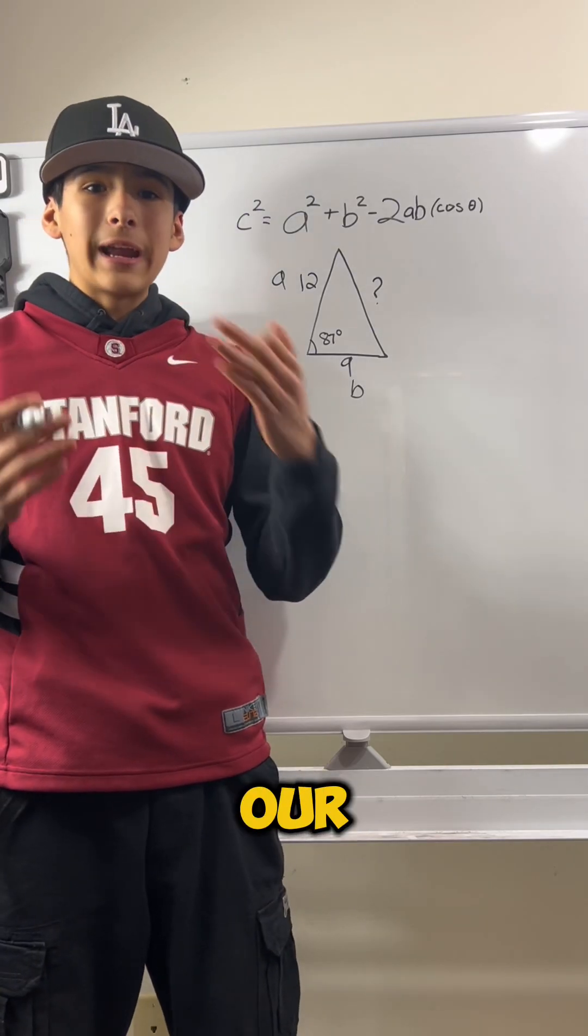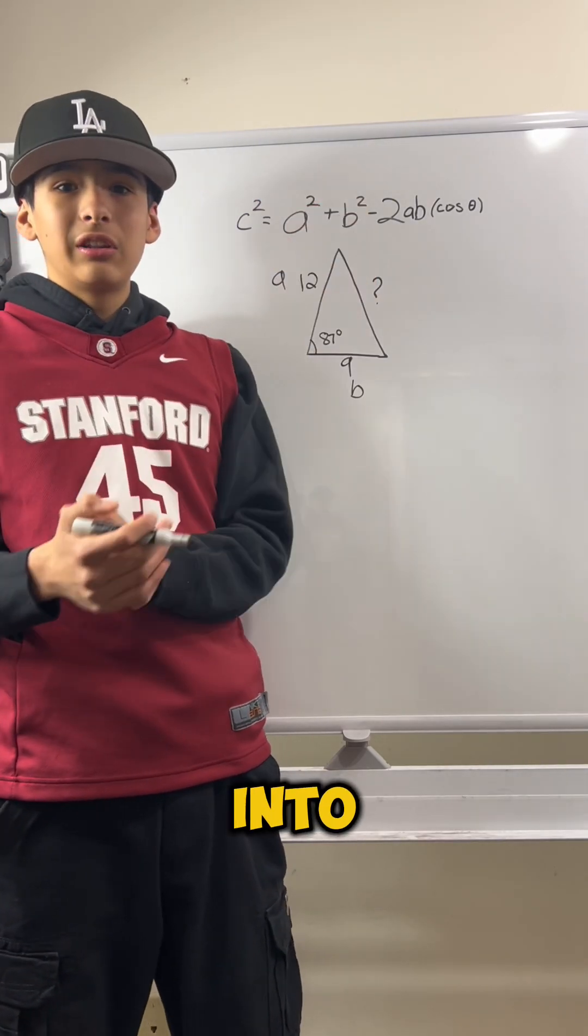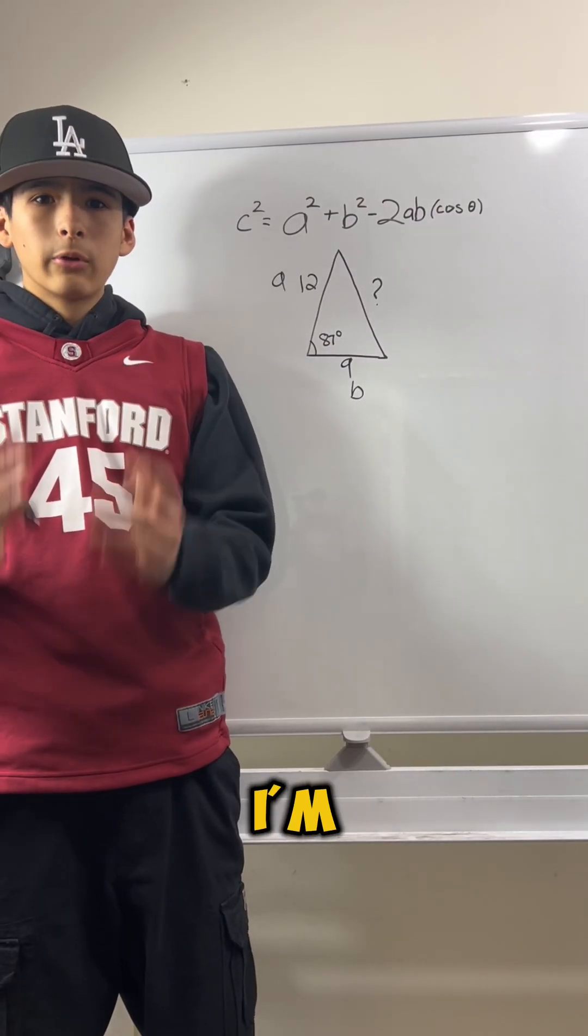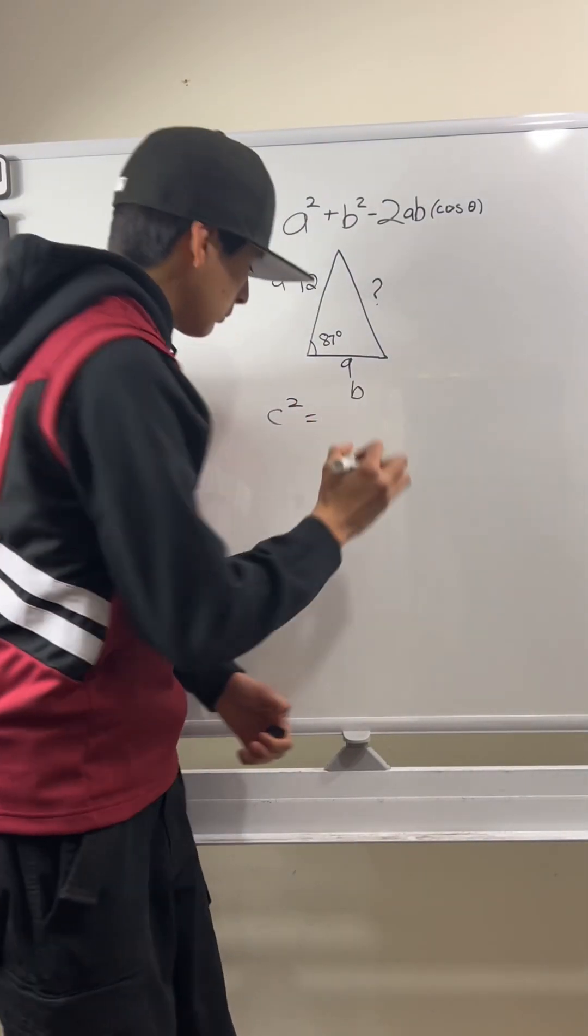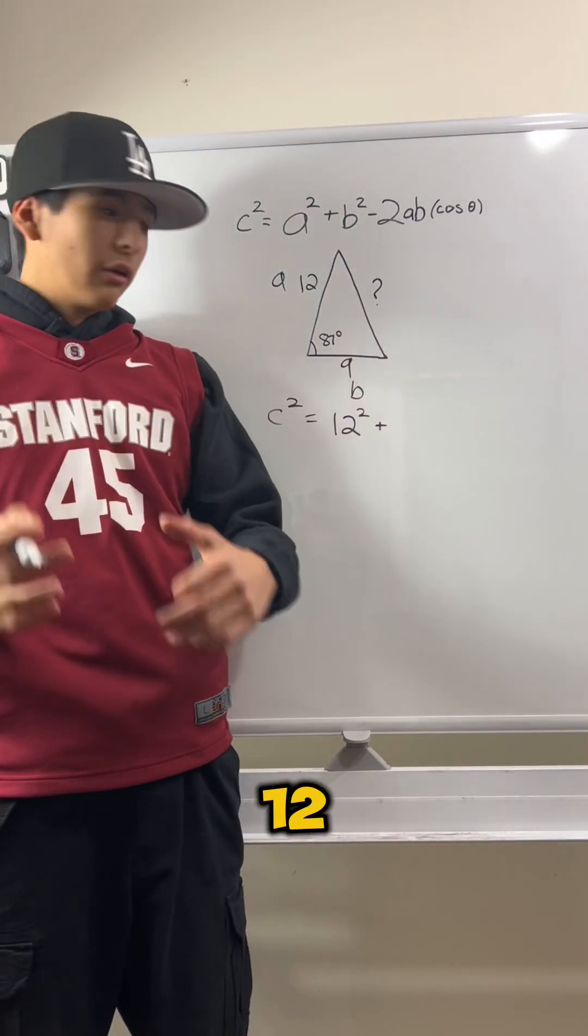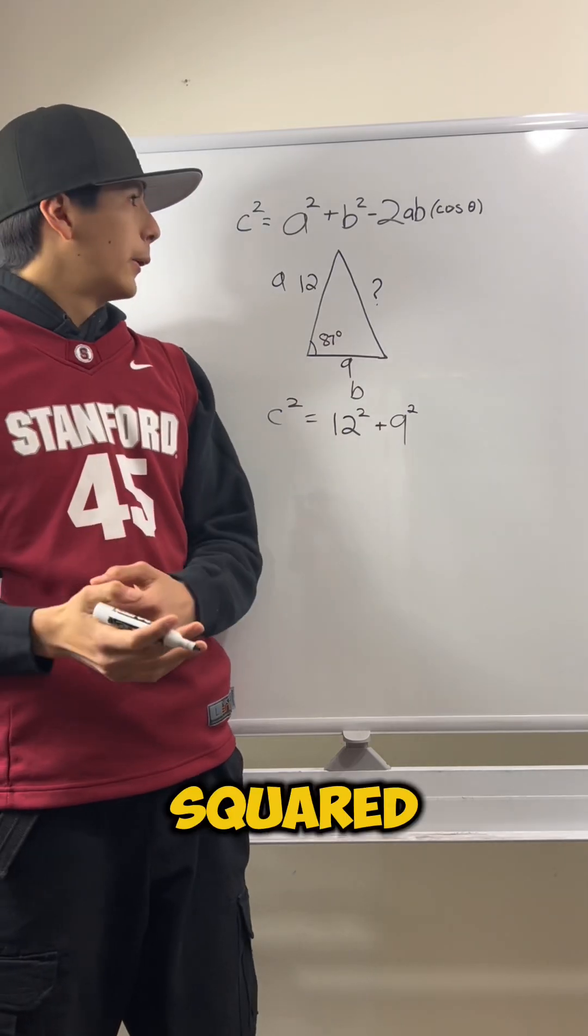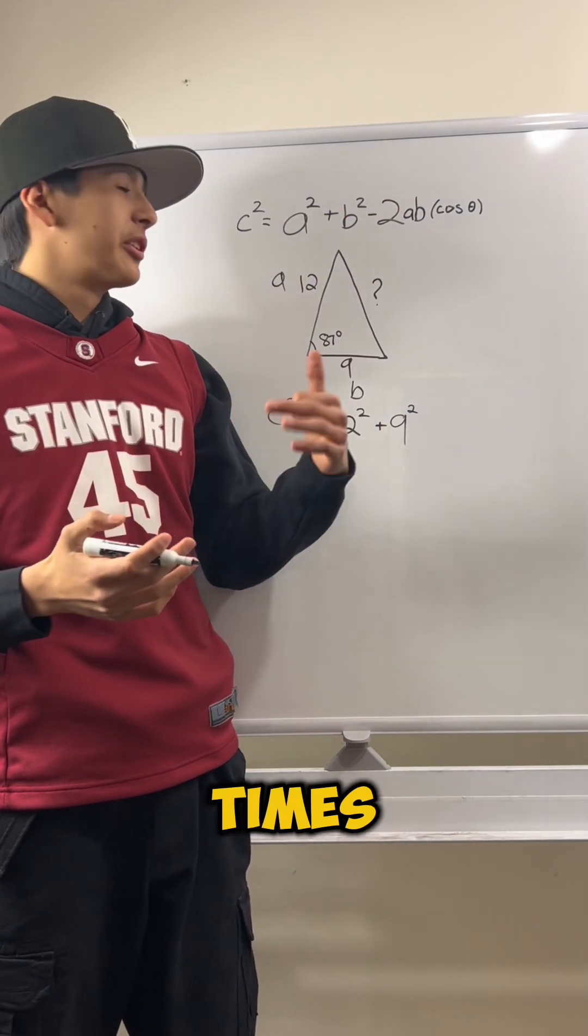Great. So now we have our A and B measurements. Now, all we have to do is plug it into the equation. So I'm going to write C squared equals 12 squared plus 9 squared minus 2AB times the cosine of theta.